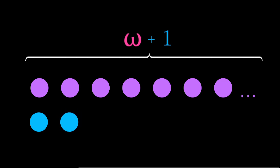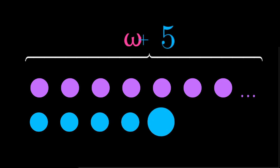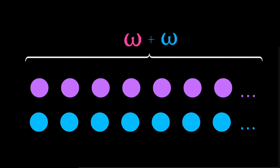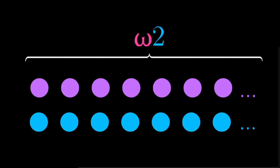When we add 2 balls after an infinite number of balls, that's omega plus 2. Then omega plus 3, omega plus 4, omega plus 5, omega plus 6, omega plus 7. And then we can even have an infinite number of balls after an infinite number of balls, which we know as omega times 2.